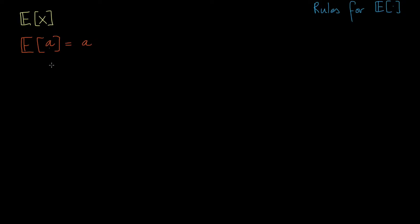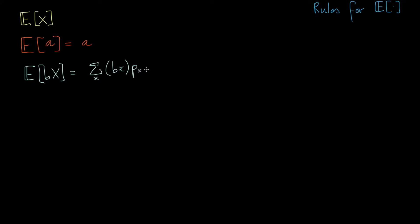Now suppose we take some random variable x and multiply it by some constant b. b is not a random variable — it's just a constant. We ask for the expected value of b times that random variable. It's helpful to write out the formula in the discrete case: the sum over all possible values of x of bx times the probability of getting that particular value, P(x). Since b is a constant, it doesn't depend on the particular value of x, so we can bring b to the front of the summation.